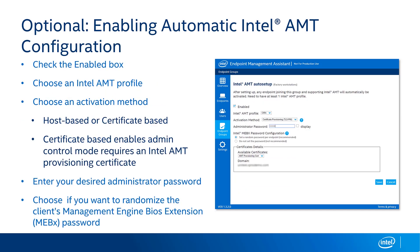Now that we have an Intel AMT configuration profile built and an endpoint group, you have the option of setting that endpoint group to automatically configure AMT anytime a new device is registered inside that endpoint group when it gets the Emma agent installed on it. First, check off the enabled box, choose the Intel AMT profile from the dropdown that you'd like to use, choose your activation method — either host-based or certificate-based — and then enter your administrator password.